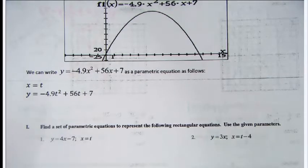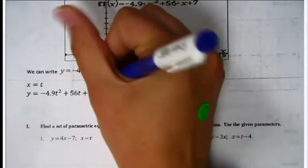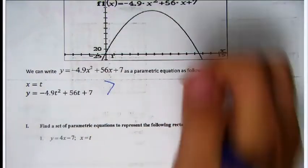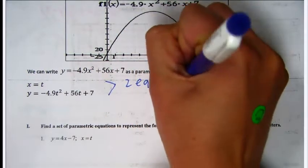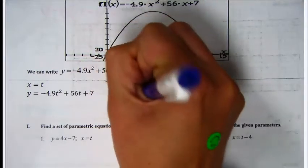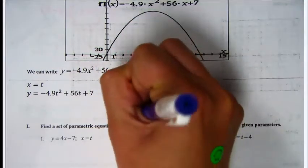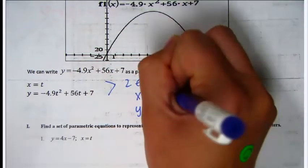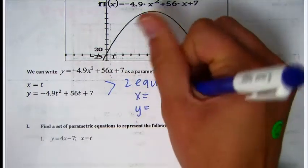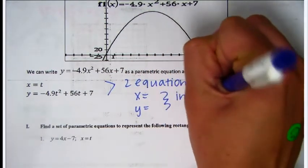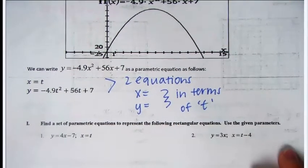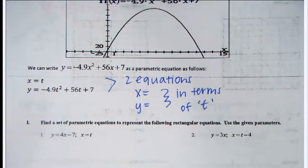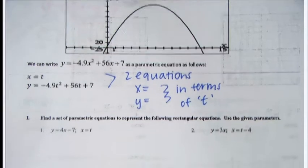Today we're going to do parametric equations and take notes. To be a parametric equation, there have to be two equations: one for x equals and one for y equals, and both of these equations are in terms of t, meaning the variable in their equation is t.